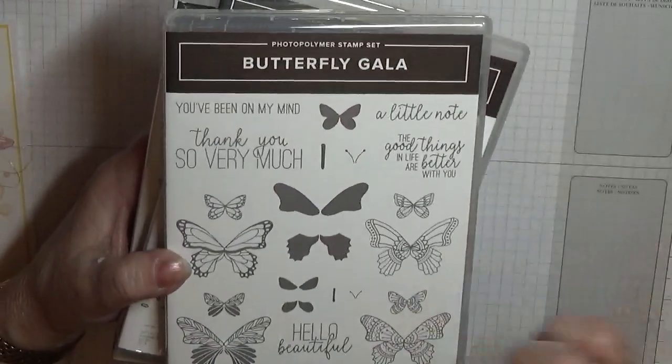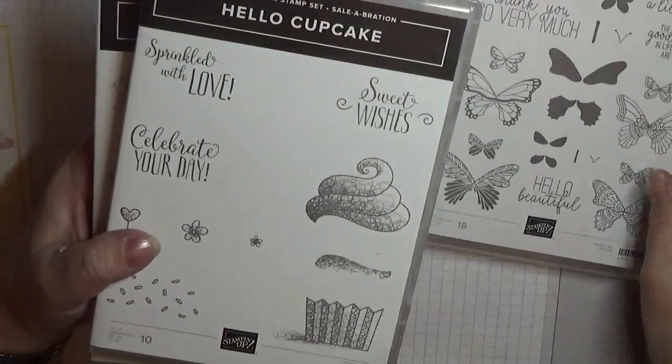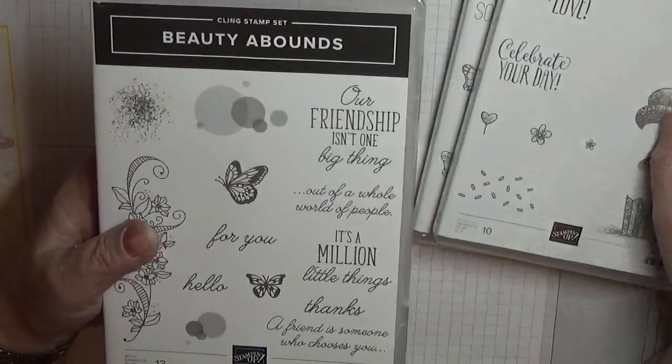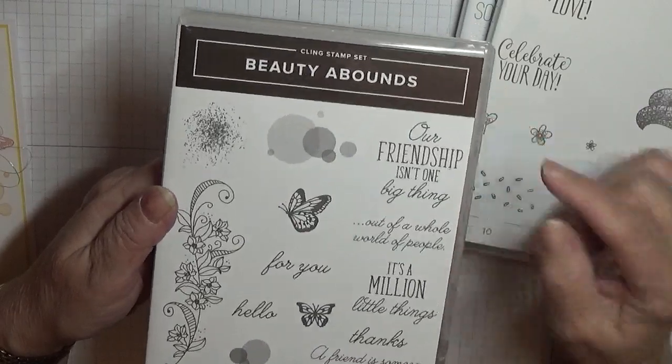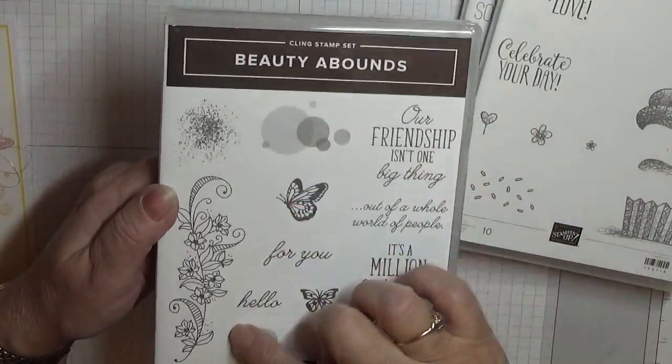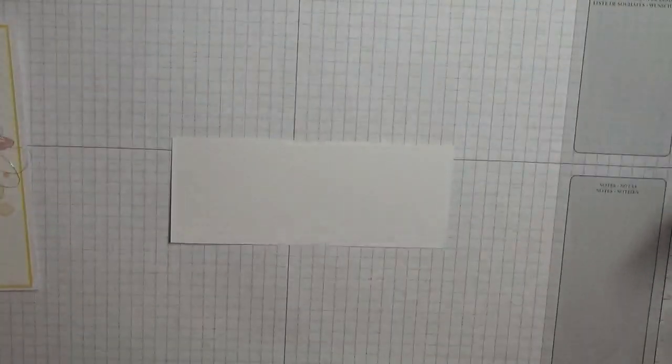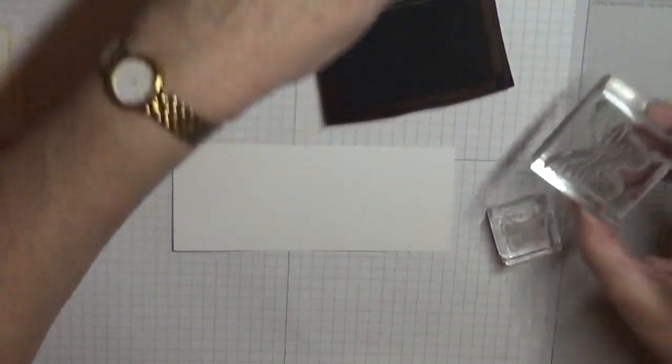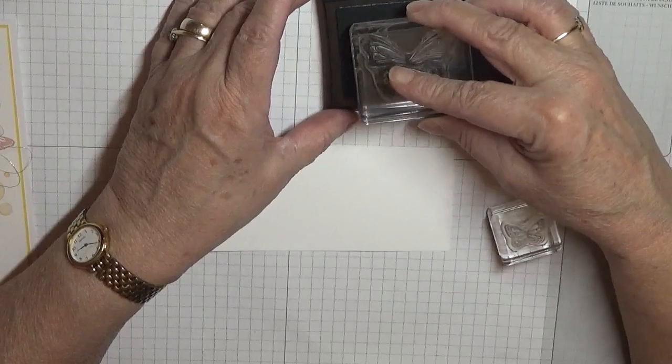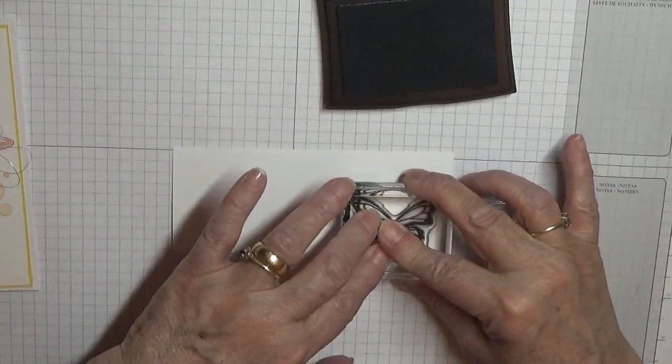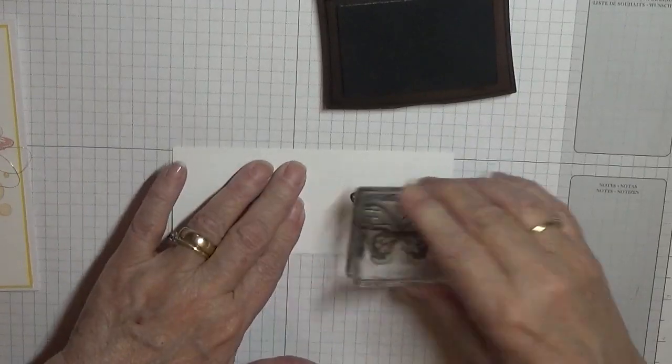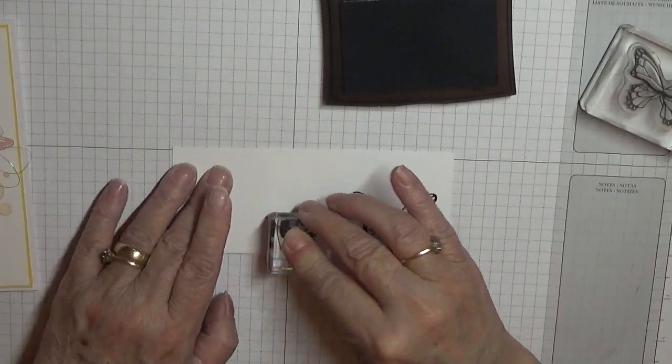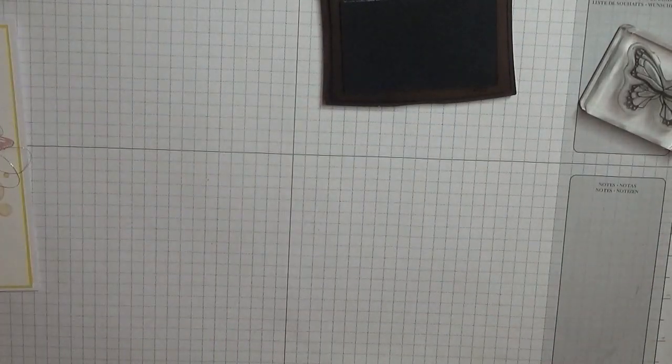I'll stamp first so they can dry so I can color them in. Our stamp sets are Butterfly Gala for the butterflies, Hello Cupcake for the sentiment celebrate your day, and Beauty Abound for the bubbles. I'm going to use both sizes. So let's stamp the butterflies. One big one and a small one.